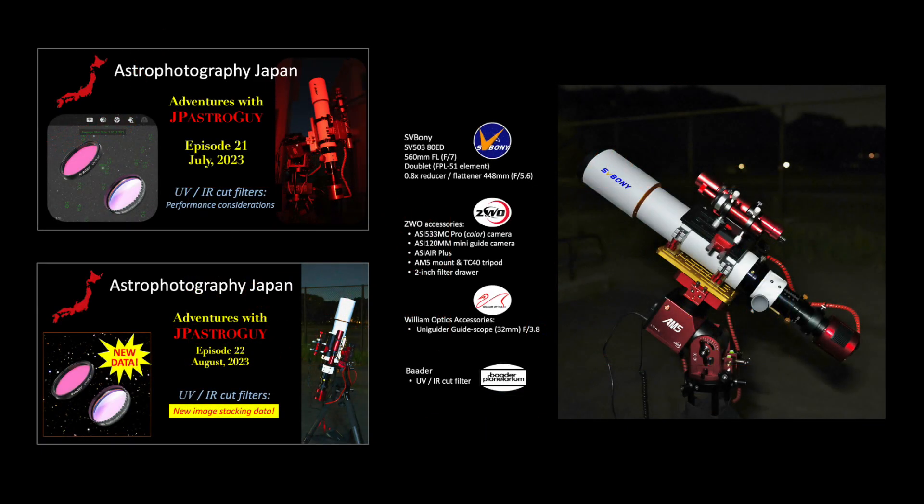In my prior two videos, I was playing around with UV-IR cut filters and generated a lot of images with the equipment setup I am showing here. There is nothing particularly fancy about it. The telescope is a Sveboni doublet design ED glass 80mm refractor. The accessories and details are listed here as well. It is a good one-shot color astrophotography rig capable of taking some nice images.